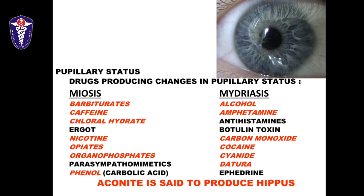Another very important topic, both clinically and from an exam point of view, is eye changes — specifically pupillary status, dilation or constriction. Common drugs causing miosis include barbiturates, caffeine, chloral hydrate, ergot, nicotine, opiates, organophosphorus compounds, and phenol — with organophosphates being the most common. Drugs causing mydriasis include alcohol, amphetamine, antihistamines, botulinum toxin, carbon monoxide, cocaine, cyanide, datura, and ephedrine.